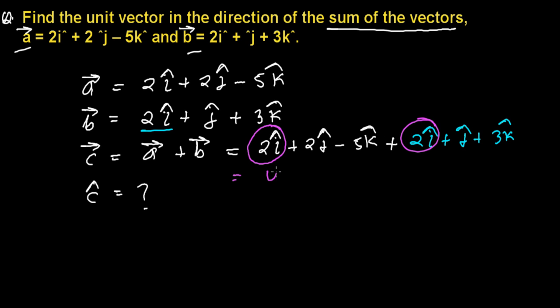So 2i plus 2i, that's going to be 4i. In the same way, 2j can be added with j, so we'll get 2 plus 1, that is 3j. And in a very similar way, minus 5k and 3k, plus 3k, it's going to be minus 2k. So this is the new vector c.